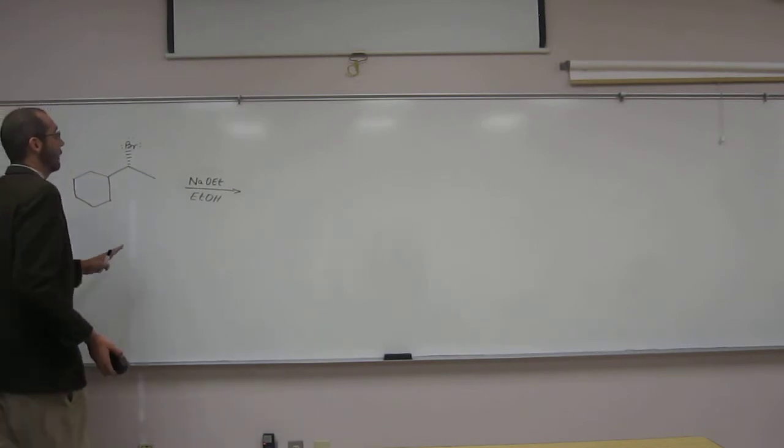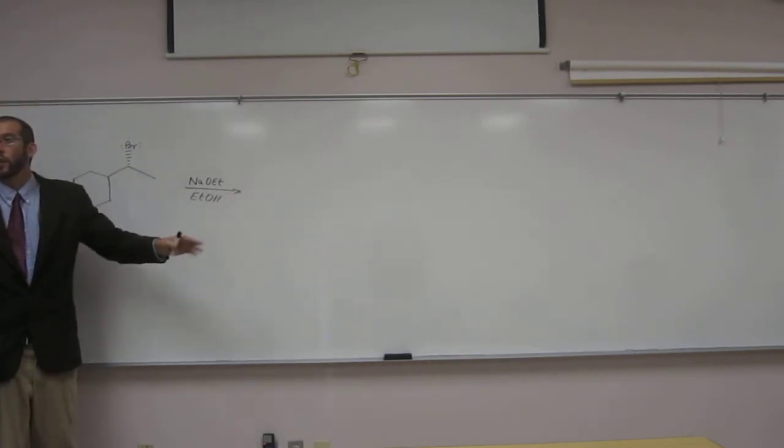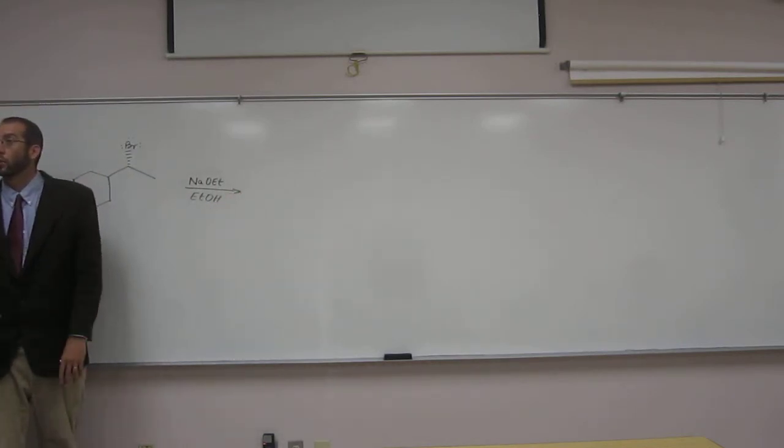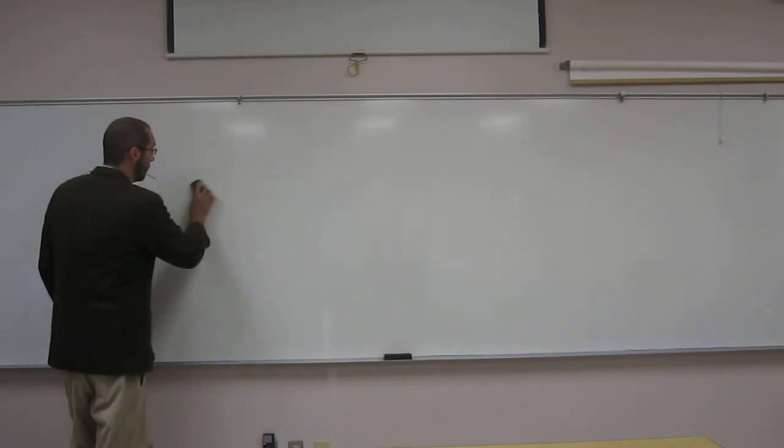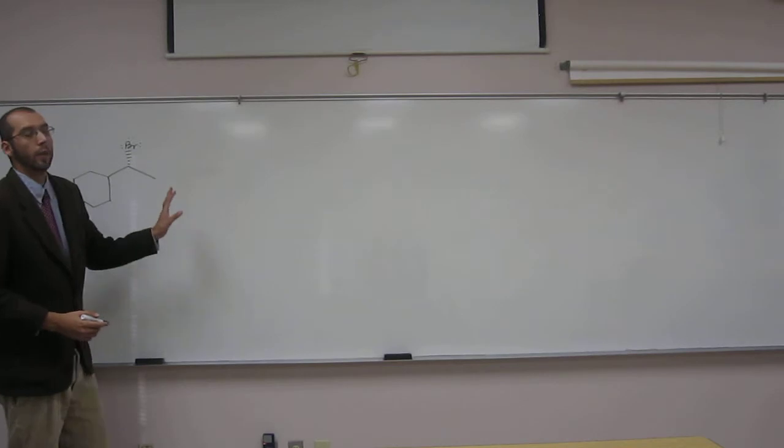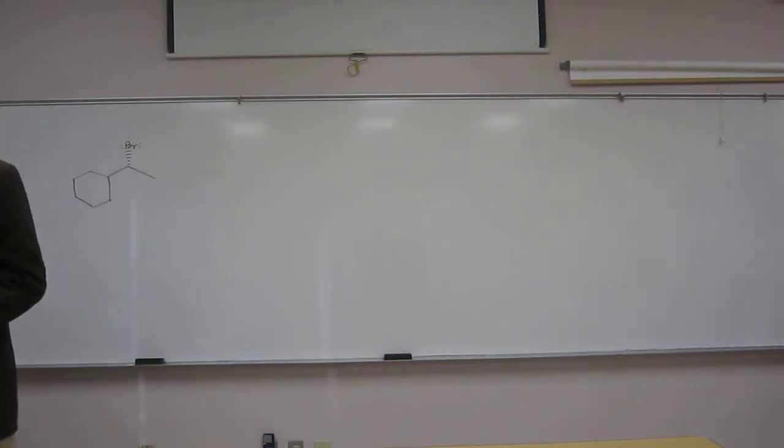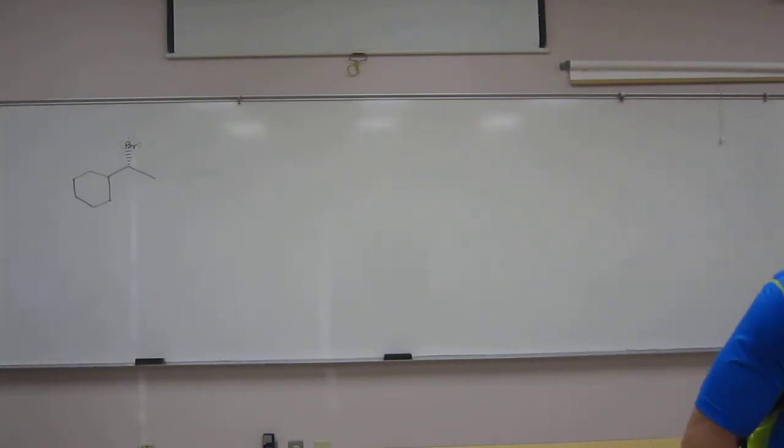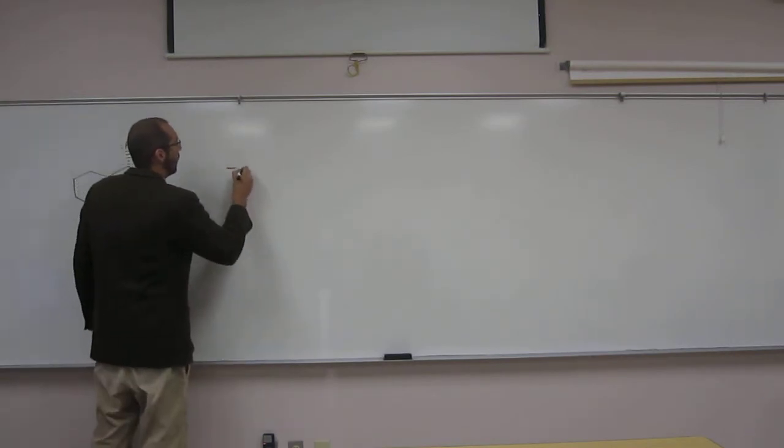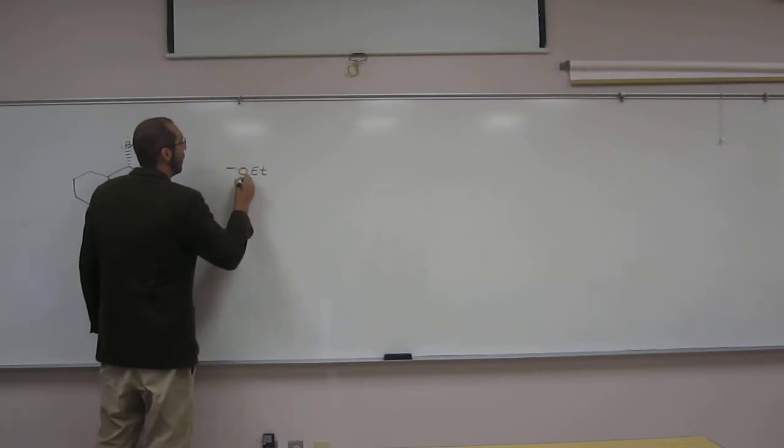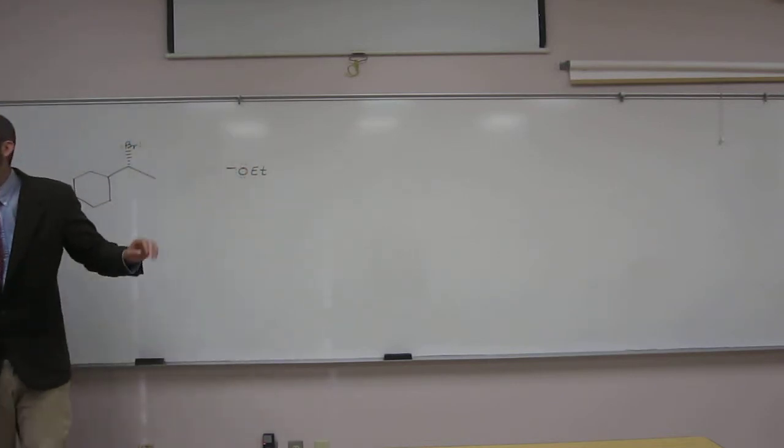Okay? So remember what we like to do. We like to erase this stuff and draw out the Lewis structures of the reacting molecules. Okay? So let's erase that. And remember Na plus is the spectator ion, so we've got the negative OEt being our strong base.